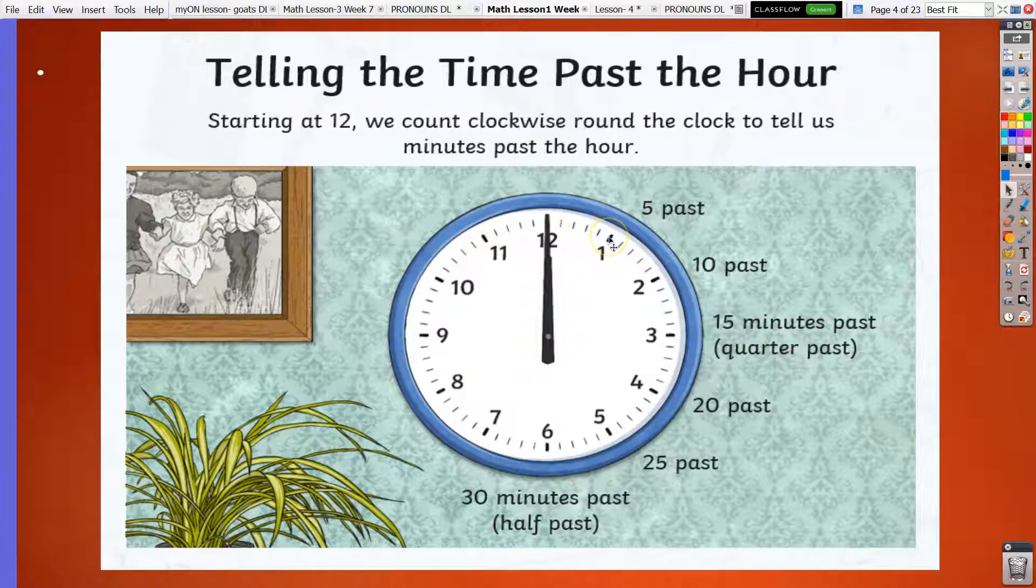So one is five, five past, 10 past, 15 minutes past. Remember, if it's 15 minutes, that's already the first quarter, so we have quarter past. 20 past, 25 past, and 30 past or half past. This is the half of the hour or of the clock. So when it reaches 6, that is 30 minutes past or half past.